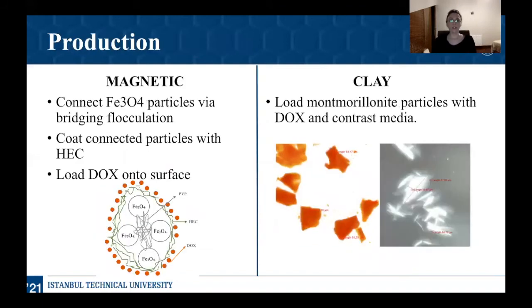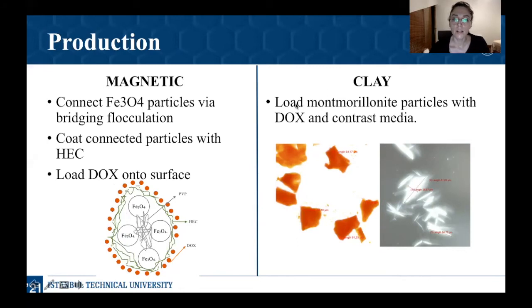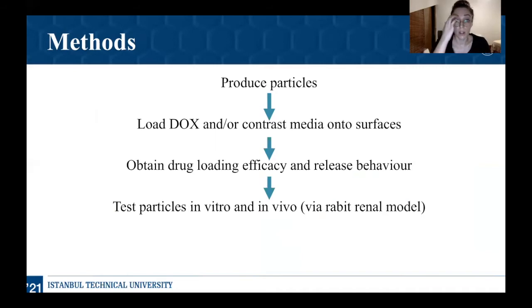After discussing the advantages of these particles, I am going to talk about the production steps we took. First, I am going to explain our magnetic particles. Here we can see the illustration of the particle structure we produced. First, we connected the iron oxide particles via bridging flocculation. Later, we coated the whole surface with another polymer. And lastly, doxorubicin, which is an anti-tumor drug, was loaded onto the surface. For the clay mineral particles, we loaded bentonite with doxorubicin and contrast media via adsorption method. After producing the particles, we obtained drug loading efficiency and the release behavior of each particle. Finally, we tested these particles in vitro and in vivo.